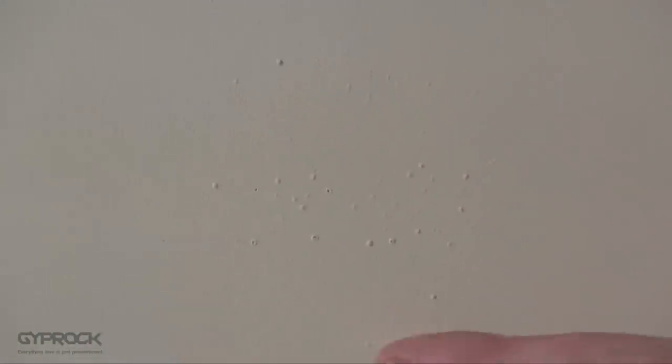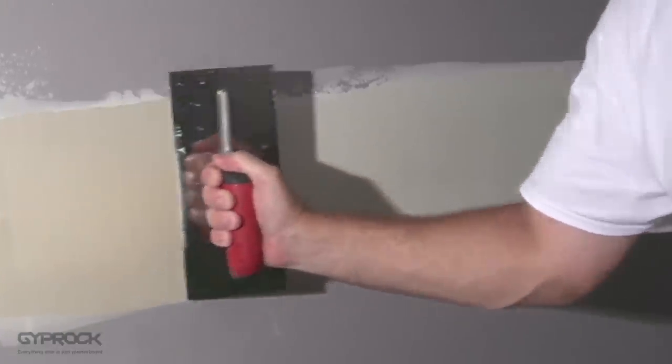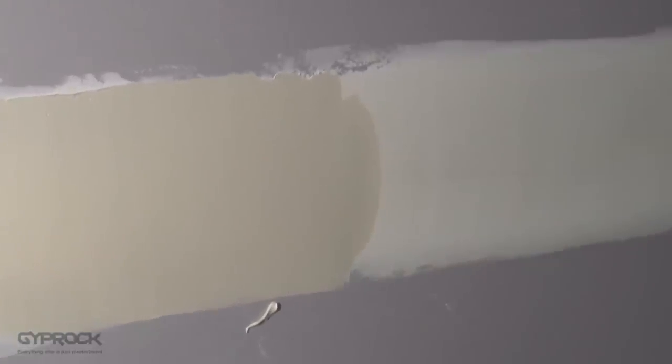The first is called pinholing. Pinholing is tiny air bubbles that form in the set joint, usually when a finish coat has been applied before the previous coats were totally dry. You'll need to sand these and apply another coat of topping compound or all-purpose compound. Once that's dry, sand, dust off, and that joint's finished.